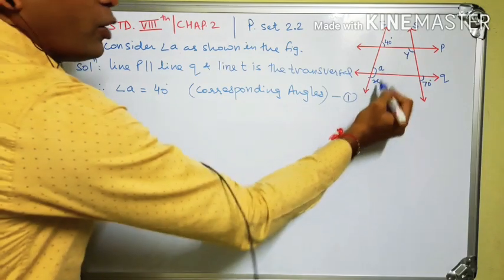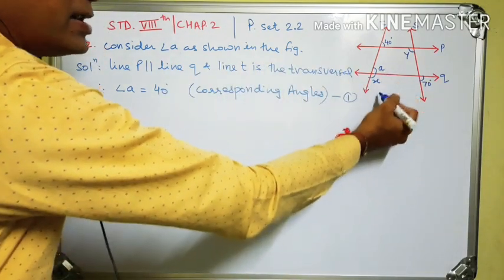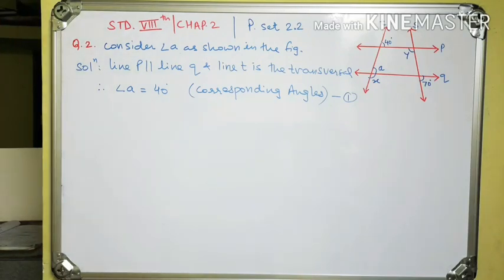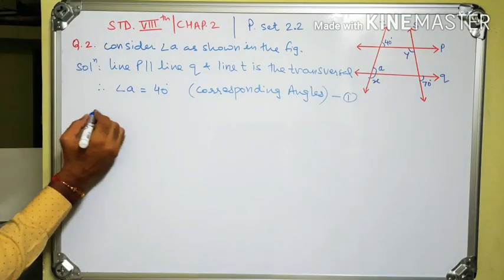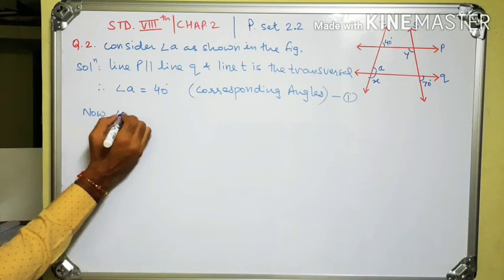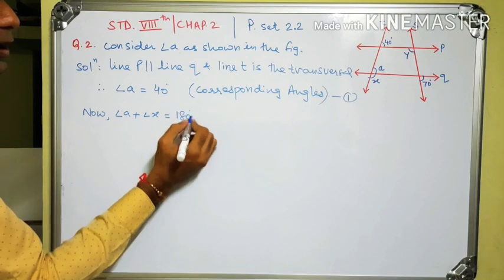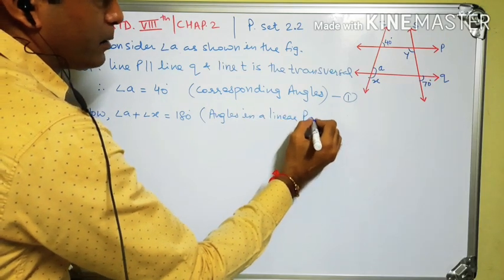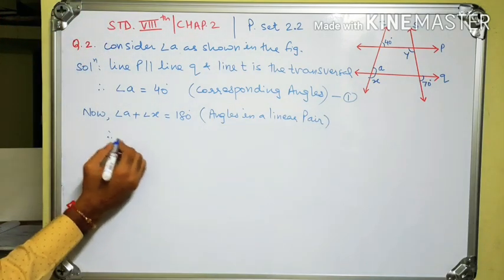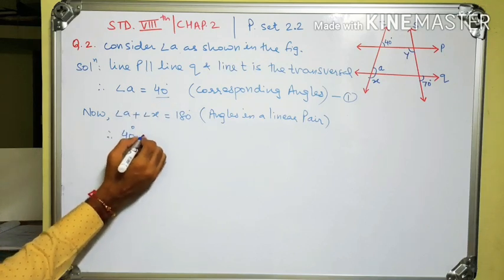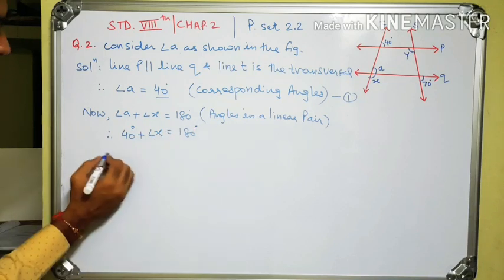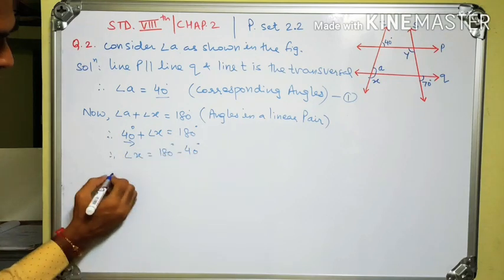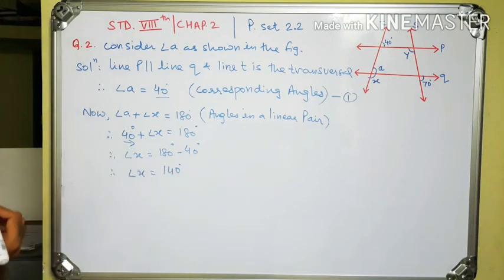Now we need the connection between A and X. Angle A and angle X are angles in a linear pair. Angles in a linear pair are supplementary, so angle A plus angle X equals 180 degrees. Therefore, 40 degrees plus angle X equals 180 degrees. Therefore, angle X equals 180 minus 40, which equals 140 degrees.